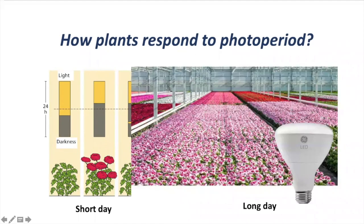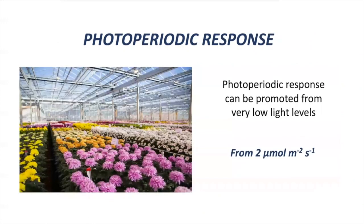In addition, plants have a response to photoperiod from very low light levels. This is why there are specific lamps created to induce a photoperiodic response. These lamps are low-intensity lamps with the correct light quality and quantity to induce a photoperiodic response. These lamps will not have a strong effect on photosynthesis and will not promote growth. They are designed to trigger a photoperiodic response based on the fact that plants respond to photoperiod from very low light levels.